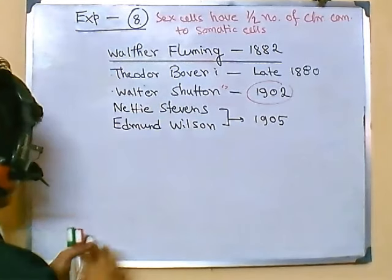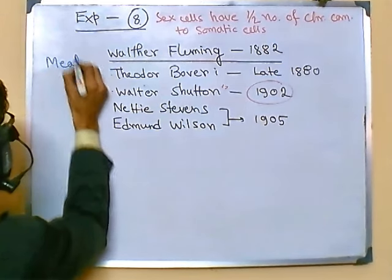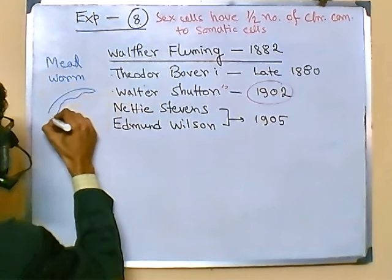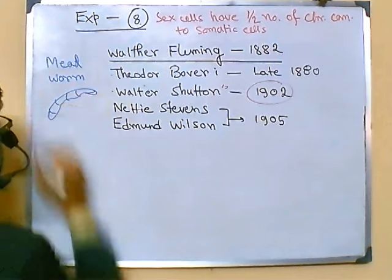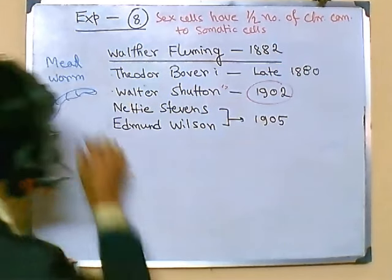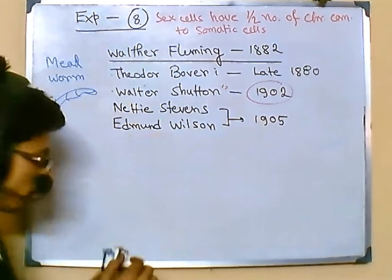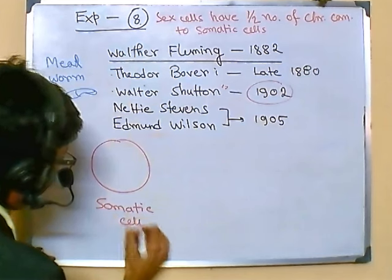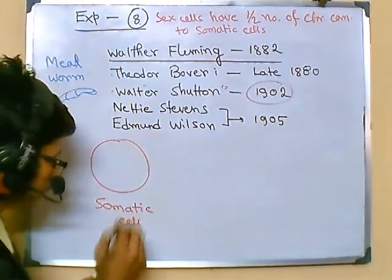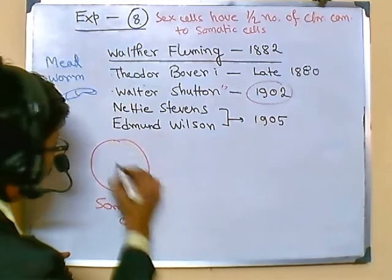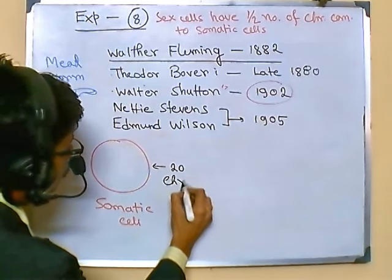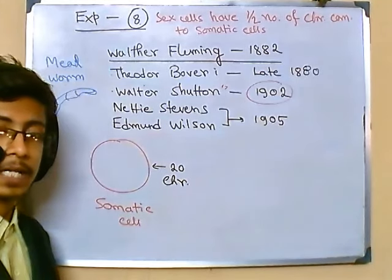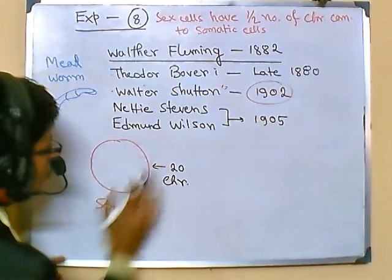Stevens and Wilson worked with mealworms. They took cells from the mealworm, and in the somatic cells of the mealworm they found the nucleus. Inside the nucleus they found 20 chromosomes, meaning 10 sets of chromosomes are present.